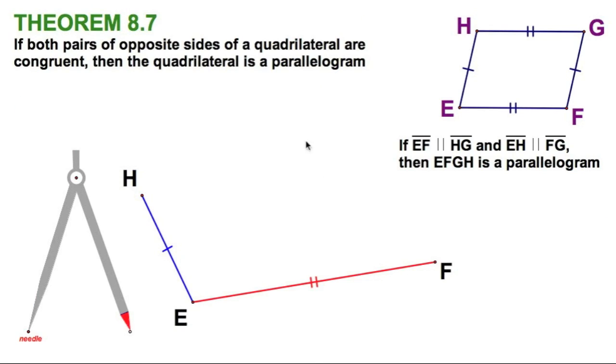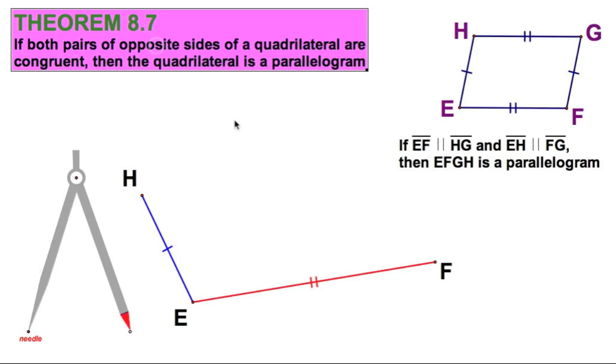In this compass construction, we're going to construct a parallelogram with compass and straightedge like this one, EFGH, where we have two pairs of opposite sides that are congruent. This is going to model theorem 8.7.